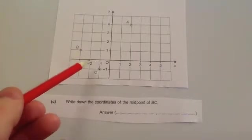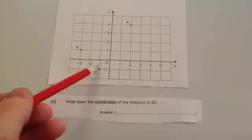You can see that the midpoint is going to be here at this coordinate, which is 2, 0. So 2 across, 0 up, because there's B and C and that's in the middle.